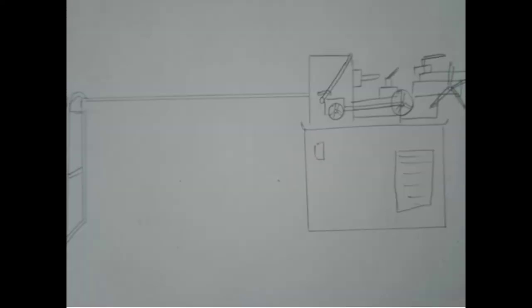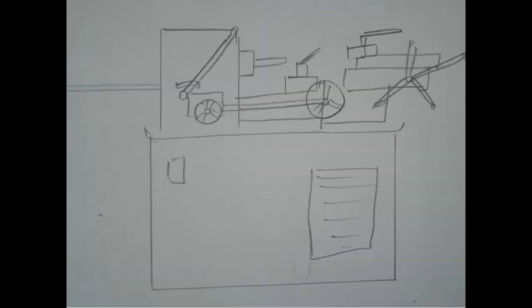I have already drawn the sketches, so we can go directly to the working of capstan lathe. Before I start, I want to point out the main difference between the capstan lathe and the turret lathe. In capstan lathe, the turret head is mounted on the auxiliary slide which moves on the guideways provided on the saddle, while in turret lathe, the turret is mounted directly on the saddle.